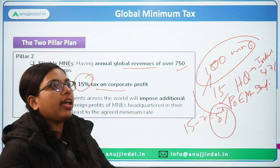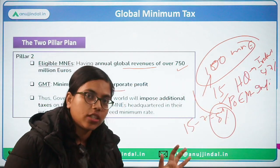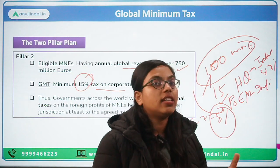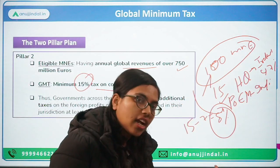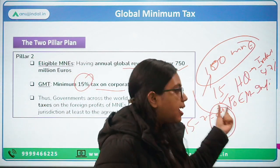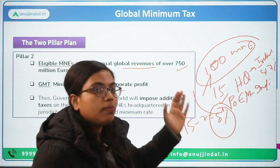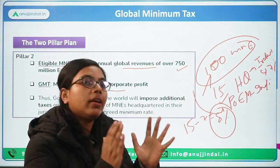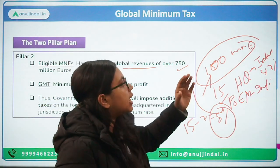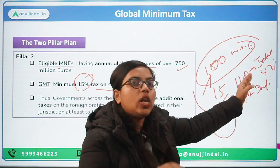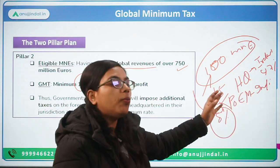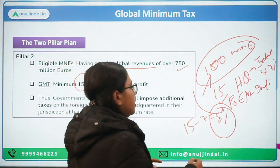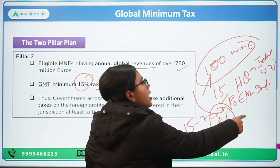A minimum 15% must be charged, so the role of tax haven countries will end, because countries were competing amongst themselves based on tax rates — whichever country charged the lowest rate, companies would move there. Now because of the global minimum tax, companies would have to pay on average a minimum effective tax rate of 15%. If they are paying a lower rate in a tax haven country, say 7% or 5%, then the remaining amount out of 15% will be paid as top-up taxes in the country of residence or effective management.